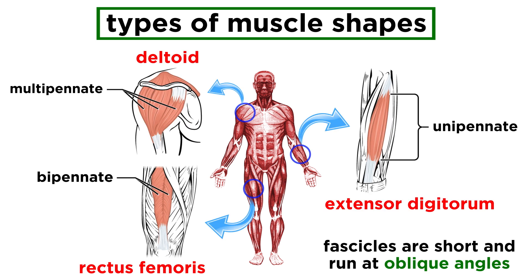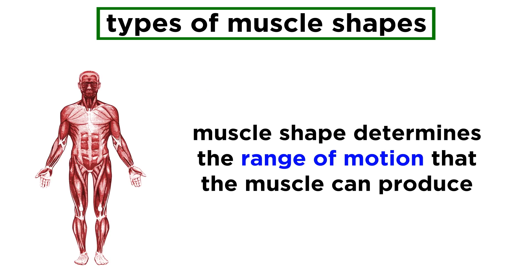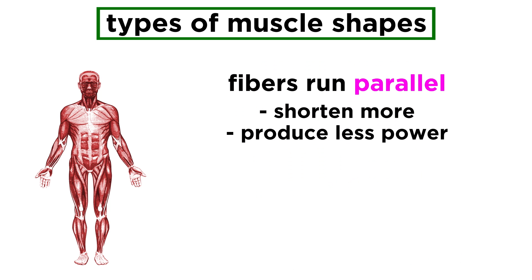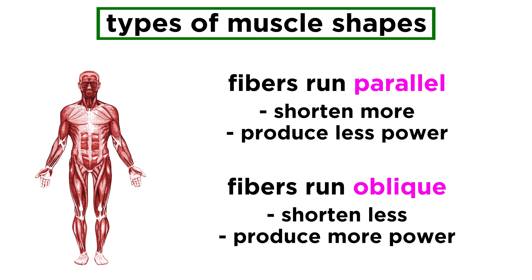In a pennate muscle, fascicles are short and run at oblique angles. They can be unipennate, where muscle sits on one side of a tendon; bipennate, with muscle on both sides resembling a feather; or multipennate, which looks like several feathers inserted into the same tendon. These different shapes determine the range of motion that the muscle can produce. Any skeletal muscle can only contract by about thirty percent, so muscles with fascicles that run parallel to its long axis will shorten the most but sacrifice some power, while muscles with many fibers at oblique angles will shorten less but produce more power.